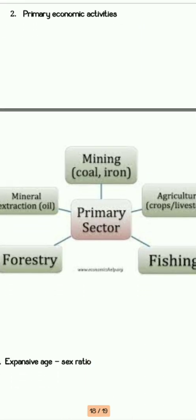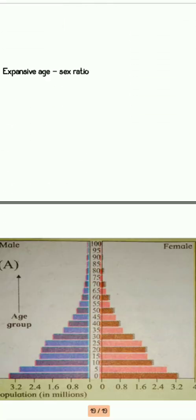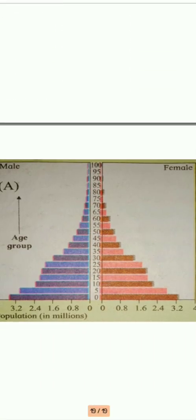Next is primary economic activity. You can draw primary economic activity by showing what comes under it: agriculture, mining, fishing, and forestry. All these things need to be mentioned in it.